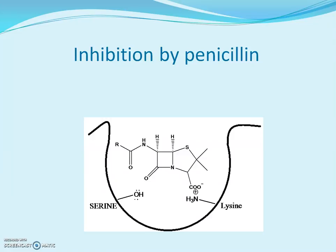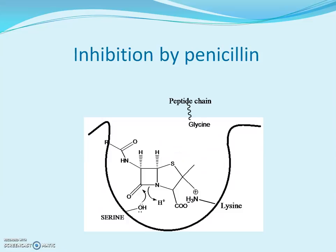Now, what does penicillin do? Part of the structure of penicillin resembles the alanine residue seen in the earlier slide, and therefore it has a tendency to bind at the same place. The serine hydroxyl group attacks the carbonyl group of penicillin, forming a bond — but this bond is irreversible, unlike in the normal transpeptidation reaction where the enzyme is regenerated. Here the transpeptidase is not regenerated; the enzyme is unable to carry out transpeptidation or peptidoglycan formation. This is how penicillin inhibits the enzyme and blocks peptidoglycan formation.